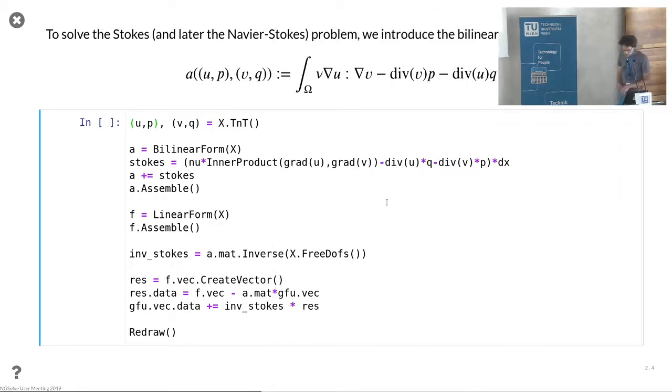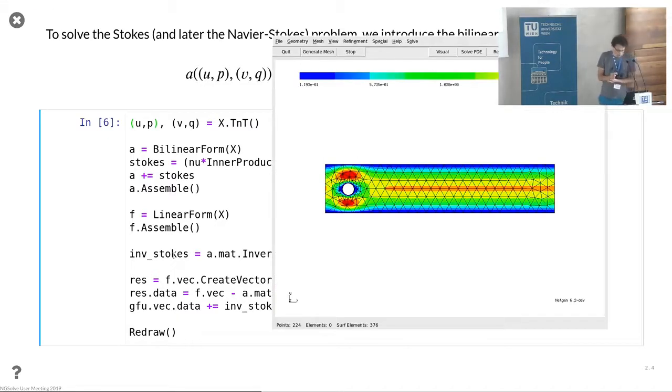Now we solved the initial Stokes problem. The A matrix is now the Stokes matrix. So this is what you have in the integral there. Later on we only have to deal with the time derivative and the convection. For the right-hand side, we have an f linear form, which is just empty. So the assemble does nothing but creating a zero-valued vector. We can set up the inverse of the Stokes. This is just needed for the initial values, not later on for the time stepping. We can execute this and we get pretty much what we would expect.